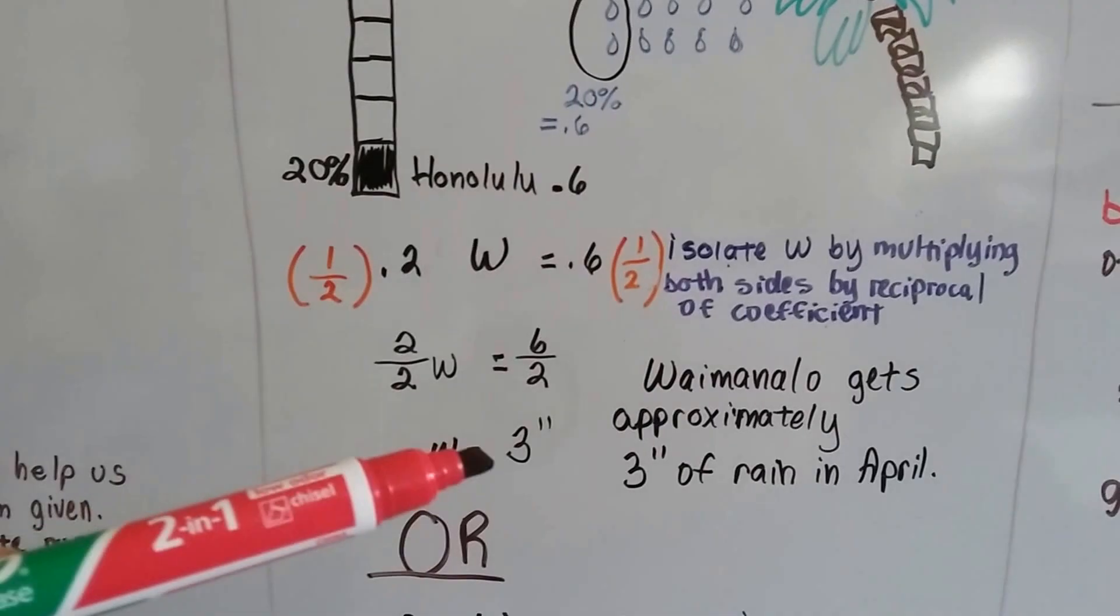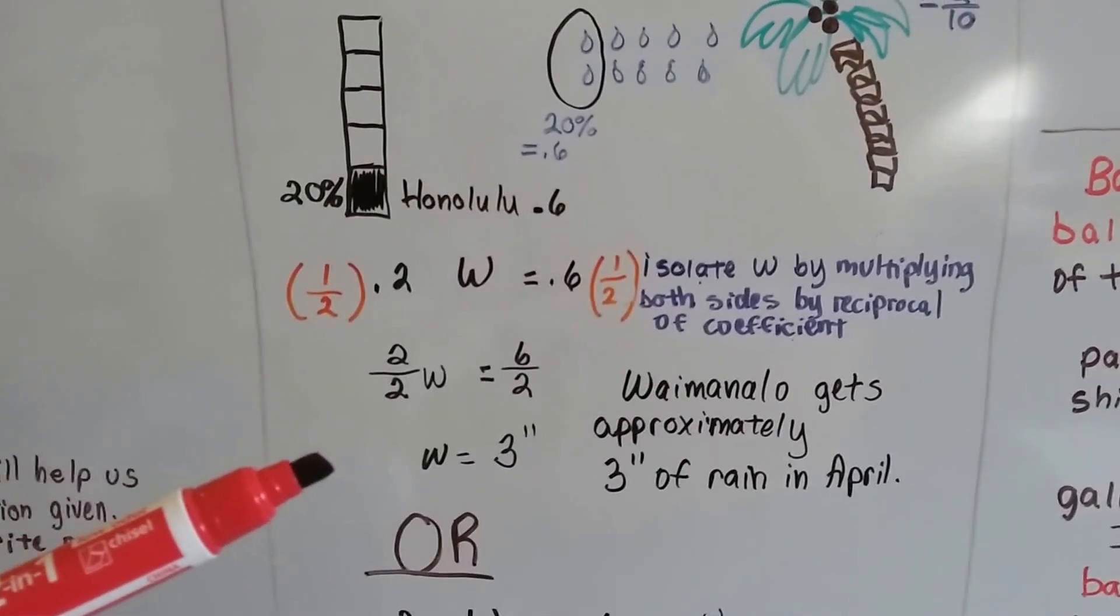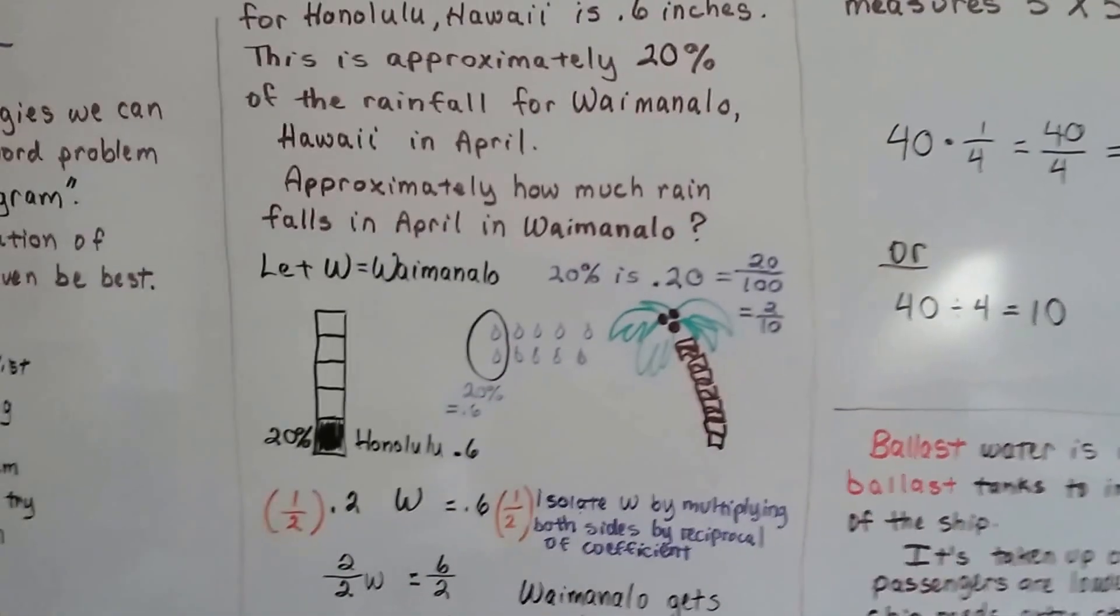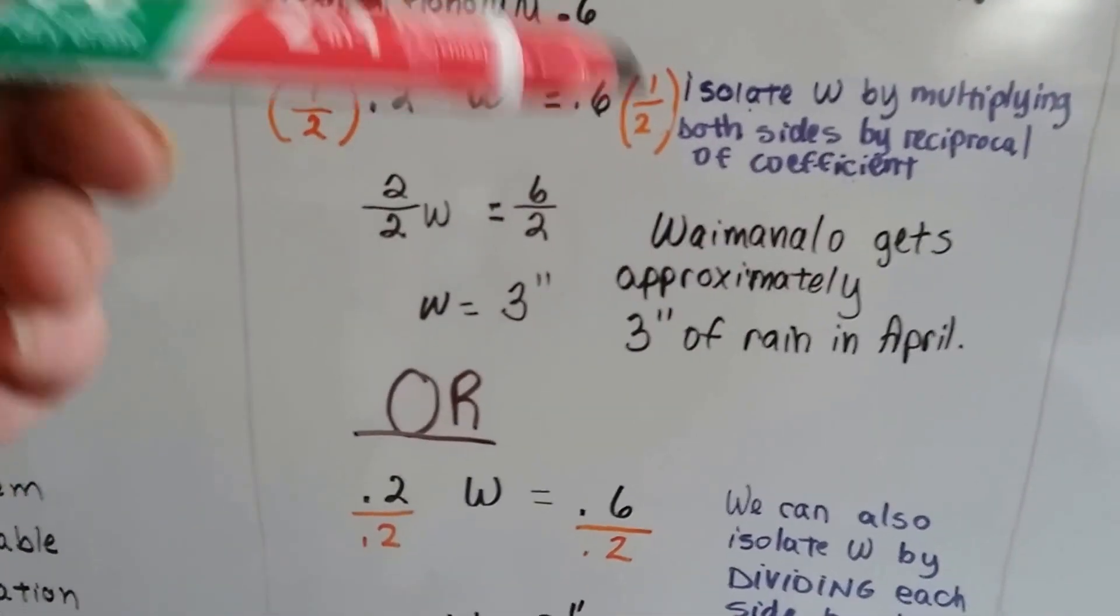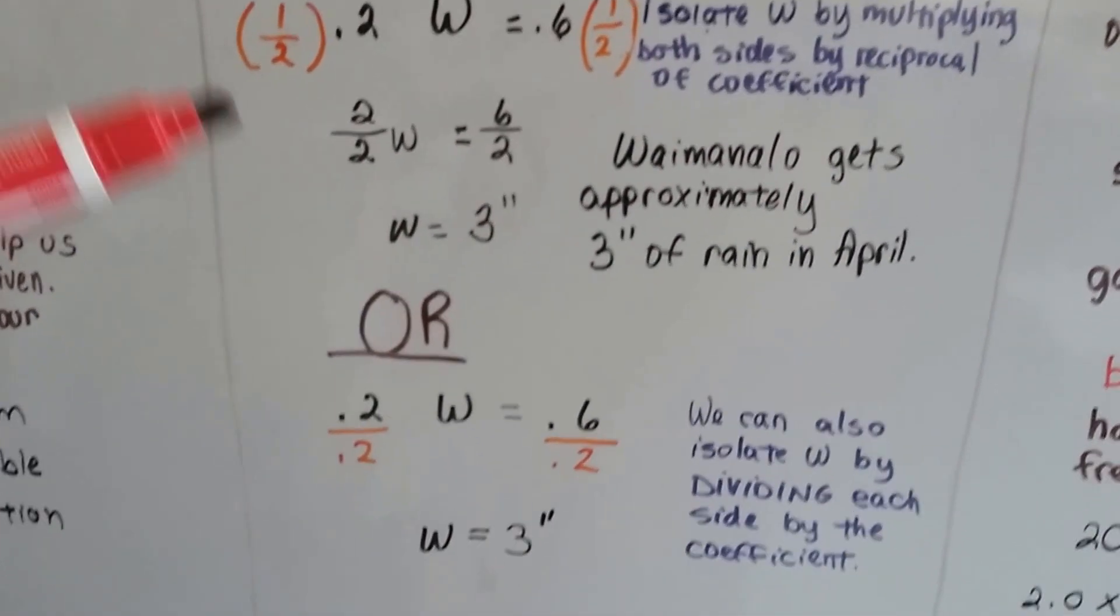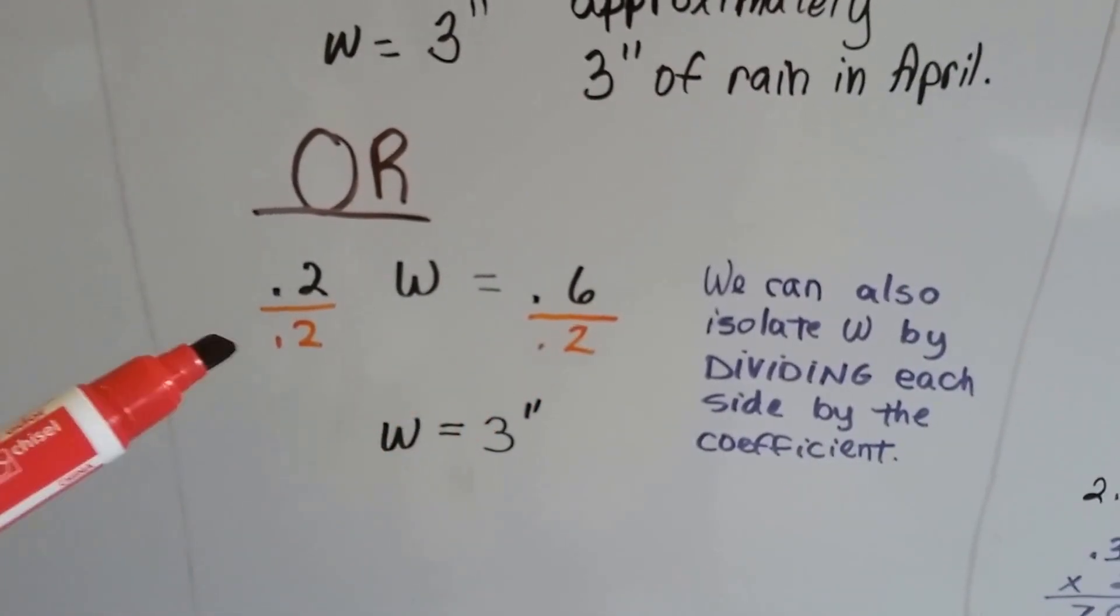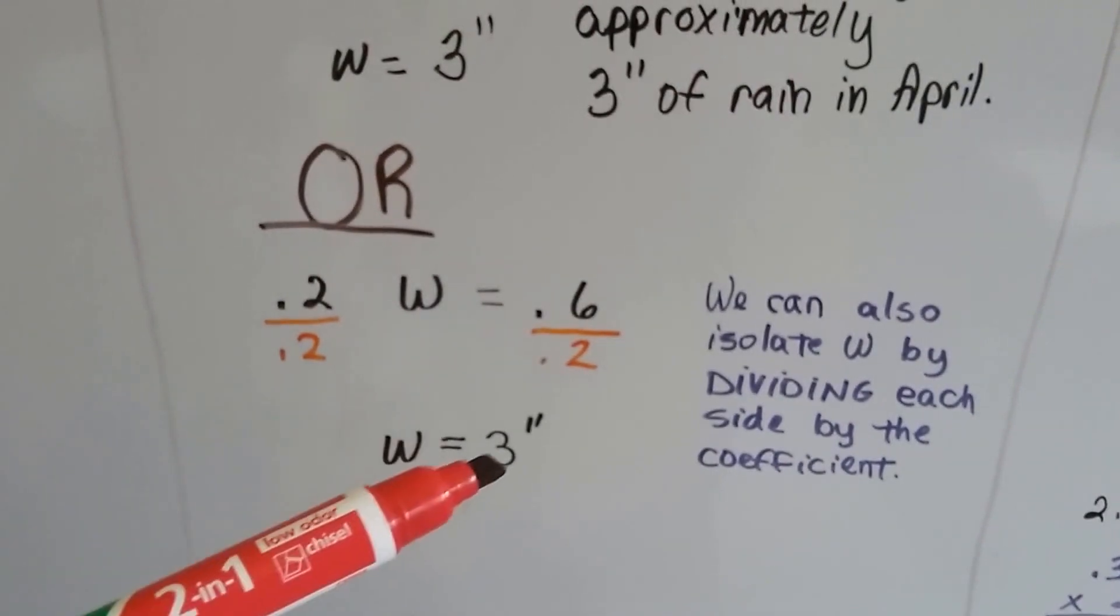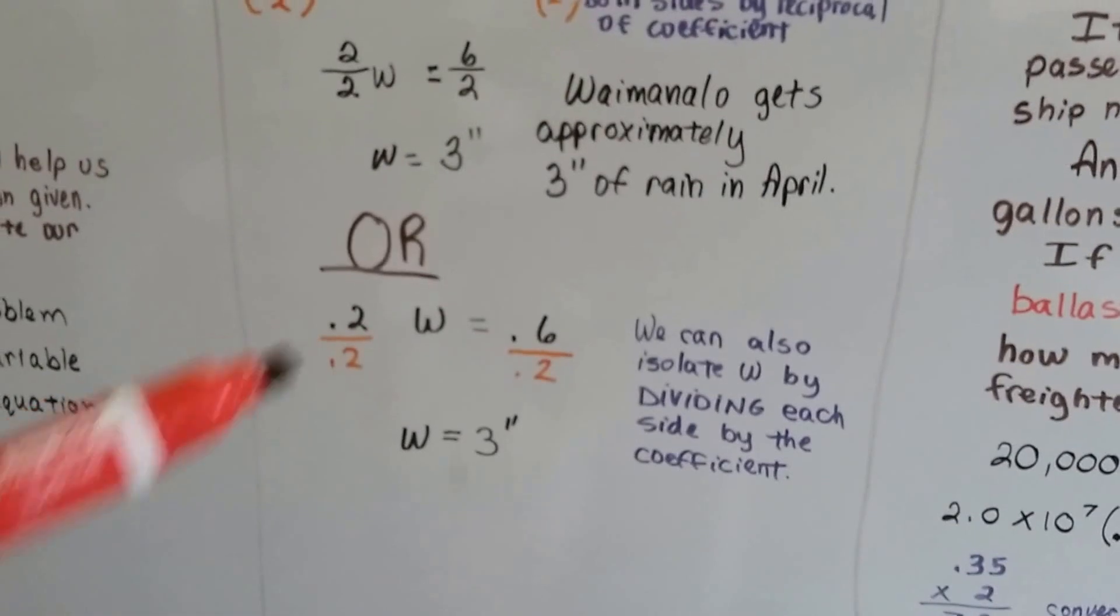So now we have W equals 3. So we know it's 3 inches. So Waimanalo gets approximately 3 inches of rain in April, where Honolulu gets 0.6 inches. We also could have used division. We don't have to multiply both sides by the reciprocal, unless that's what the teacher wants on the test for you to show your work. But we can also solve it very quickly by dividing both sides by 0.2. That's going to create a 1, and 0.6 divided by 0.2 is 3. Same thing. I prefer this way.